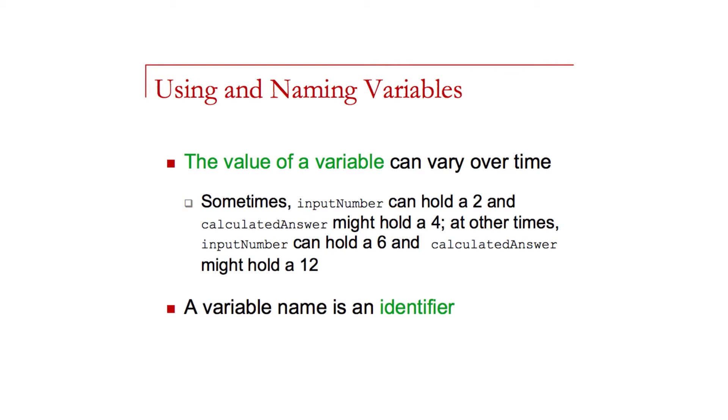Earlier in this unit, we discussed how our programs would need to store values to perform their computations. Variables are memory locations whose contents can vary over time and are used throughout the program to represent different pieces of information that our program needs. For example, if I had the variable inputNumber and I calculate a new number from that, I can perform a calculation using those two variables and store the results somewhere for some use later in my program.